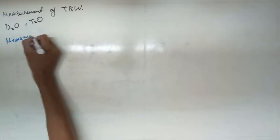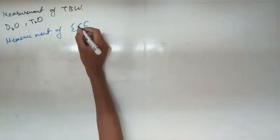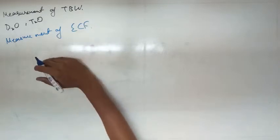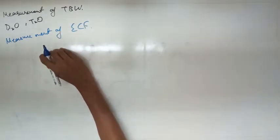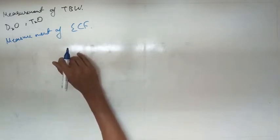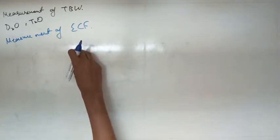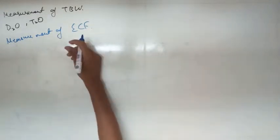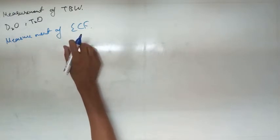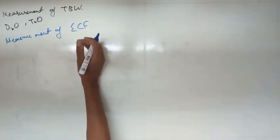Now, if you have to measure the extracellular fluid — measurement of extracellular fluid — we have to use a substance that passes through a capillary membrane but does not enter the cell. If it entered the cell, the concentration would be lower because some marker would shift to intracellular fluid. So we use radioactive sodium so that it doesn't enter the cell; these substances remain only in the ECF.